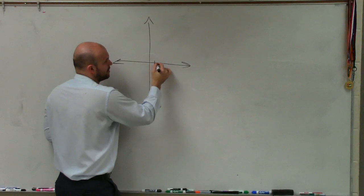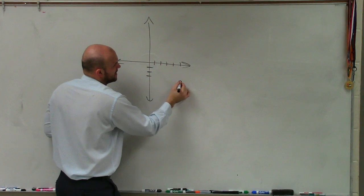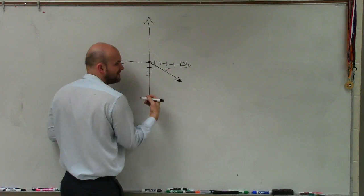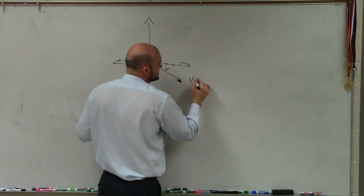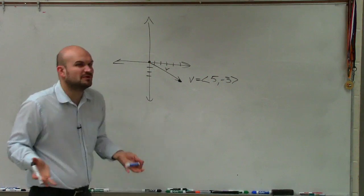So let's say we have a vector 1, 2, 3, 4, 5, 1, 2, 3. Now in component form, I would write that vector, and we'll call that vector v. I would say v is equal to 5, negative 3. That's how we'd write in component form.